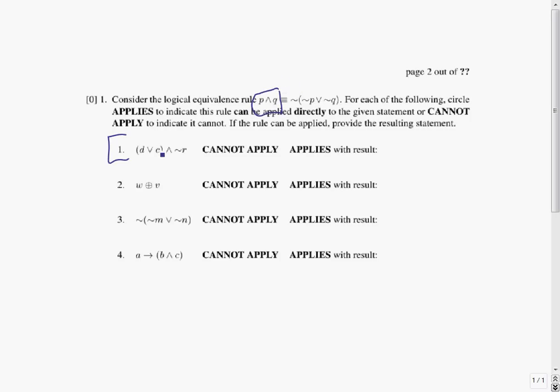That means we need to know what P matches up with, and we've got an and right in the middle here. So we'll match up P with what's on the left, and we'll match up Q with what's on the right. So this part is P, and this part is Q.